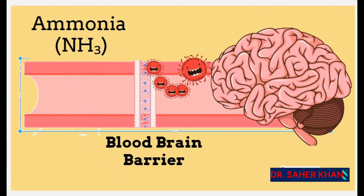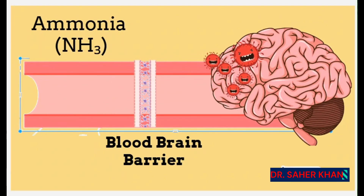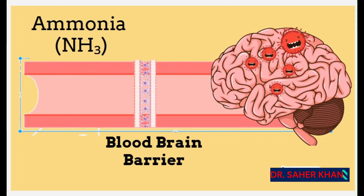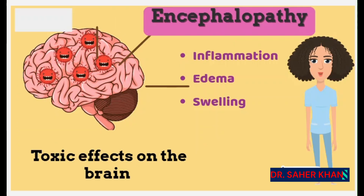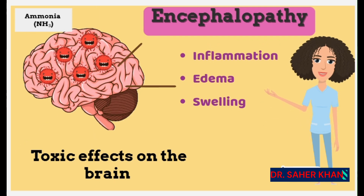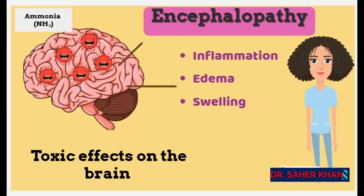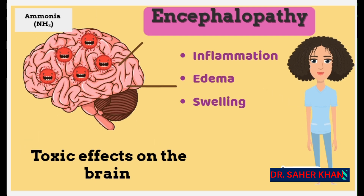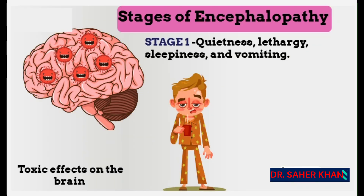Ammonia is toxic and it can cross the blood-brain barrier, which is the protective layer that surrounds the brain. And once ammonia enters the brain, it can cause swelling, resulting in encephalopathy, which is a condition that can be life-threatening.